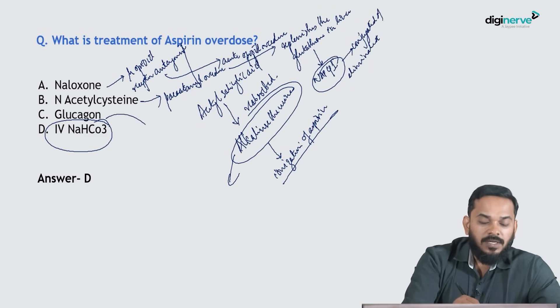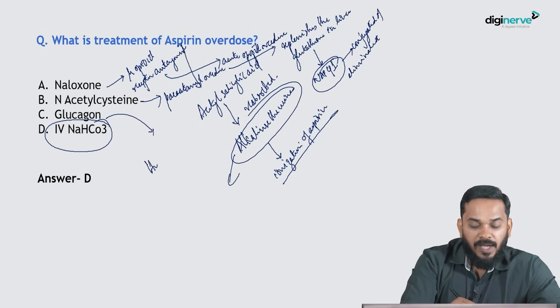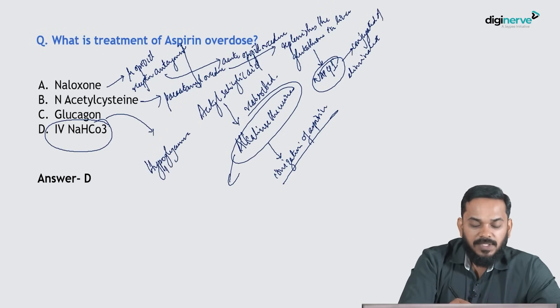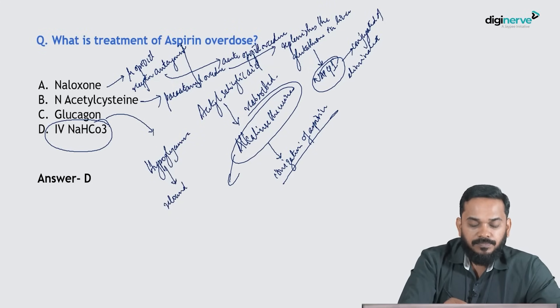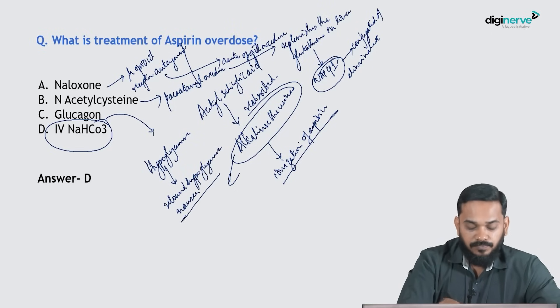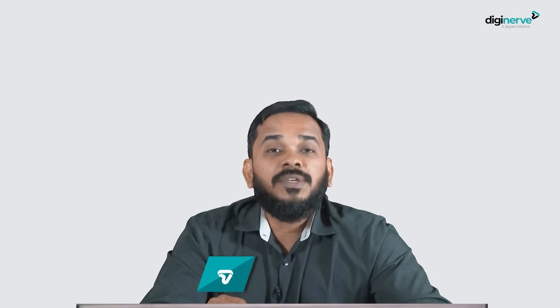Glucagon is approved for the treatment of hypoglycemia. Major adverse drug reactions of glucagon include rebound hypoglycemia and nausea. That finishes the session — hope it was helpful. Do revise all these topics before your exam. Thank you.